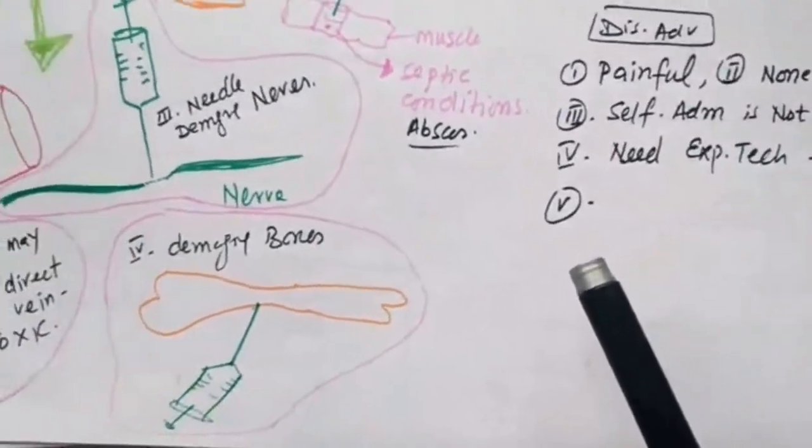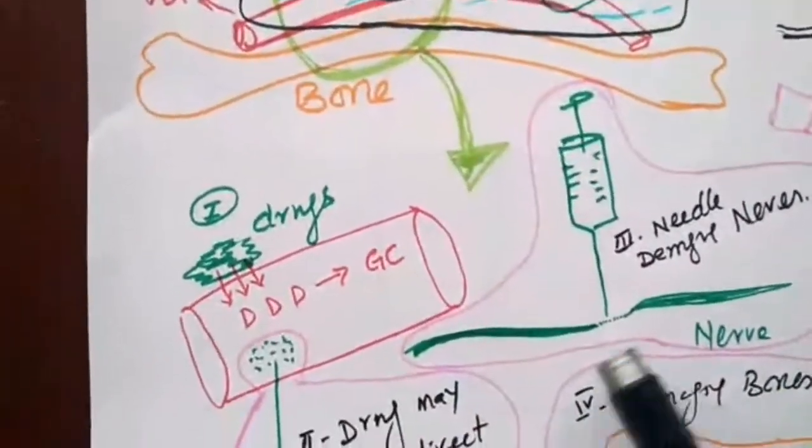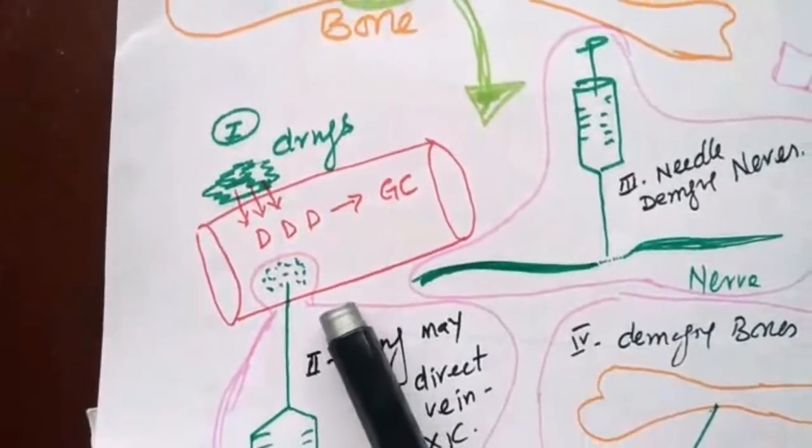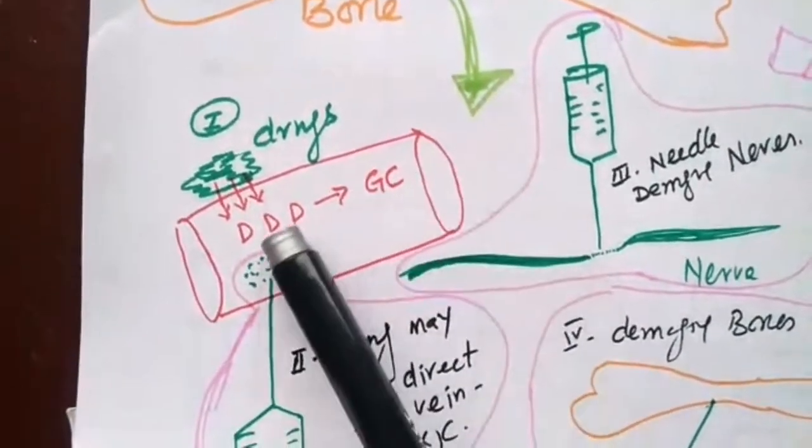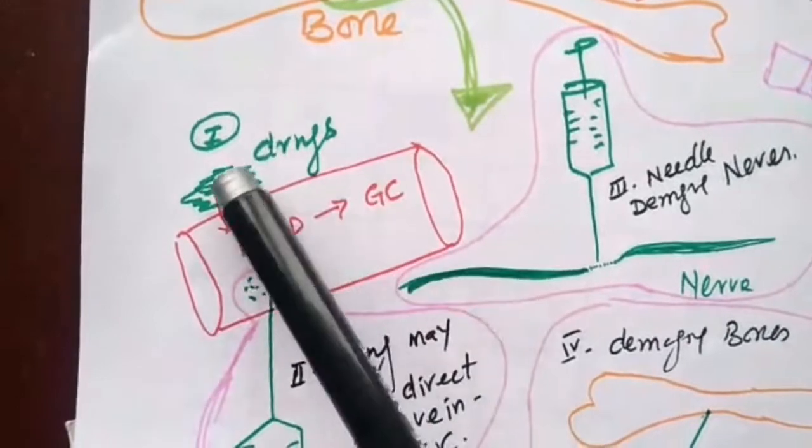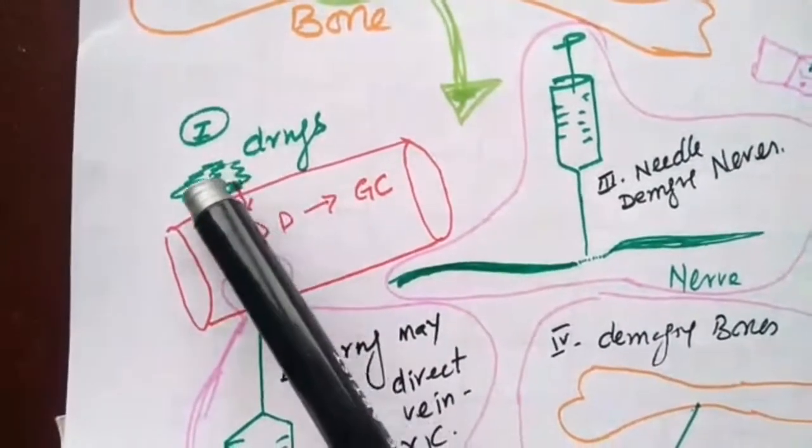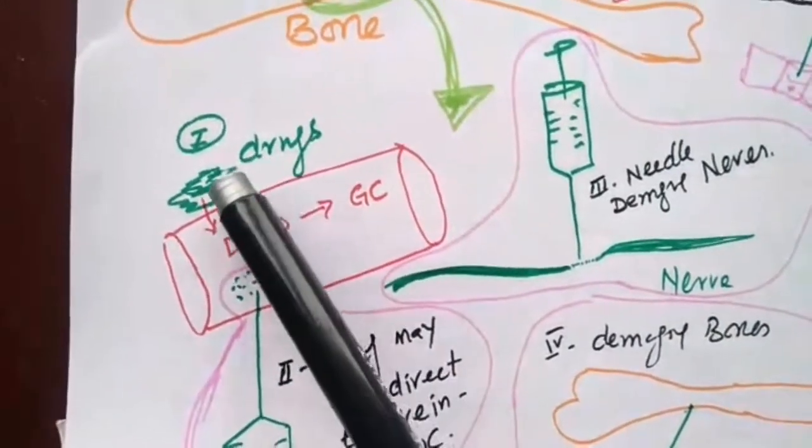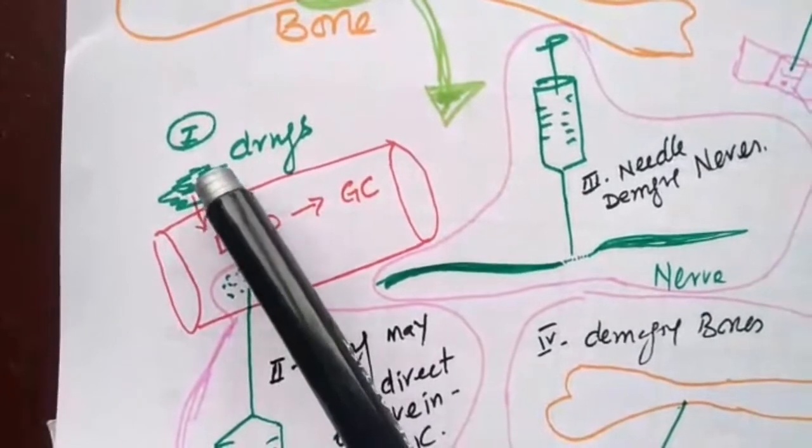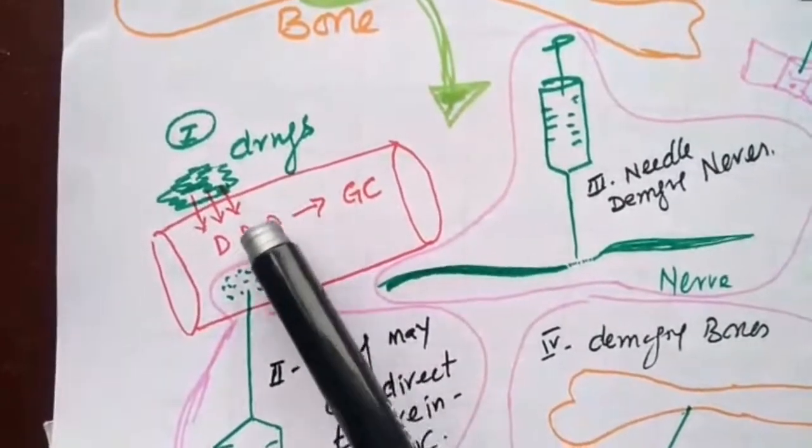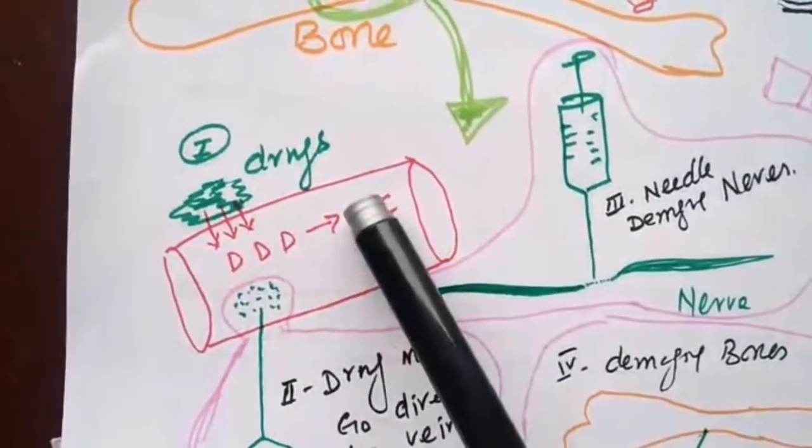Now look here, this is the bloodstream. Once we inject the drug in the muscle, the drug goes from this muscle toward the bloodstream and then goes to general circulation.